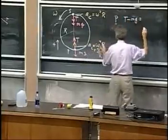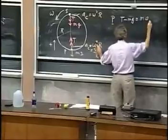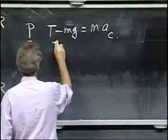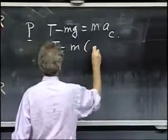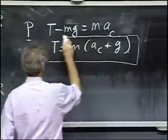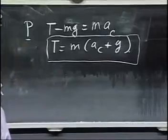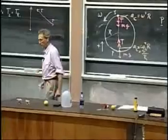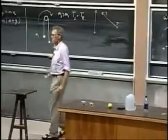must be M times the centripetal acceleration. So T must be M times the centripetal acceleration plus G. Hey, that looks very familiar. It looks like someone is being accelerated in an elevator. Almost the same equation.